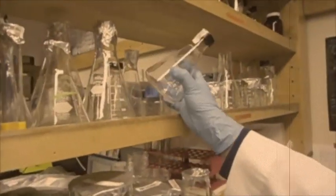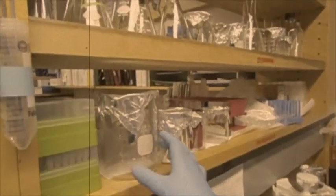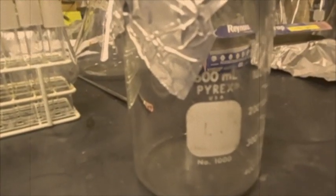To make your own LB agar plates, use a beaker of any size or shape as long as it's heat proof and has more than enough space. We will use this 600 ml beaker to hold 250 ml of our solution.